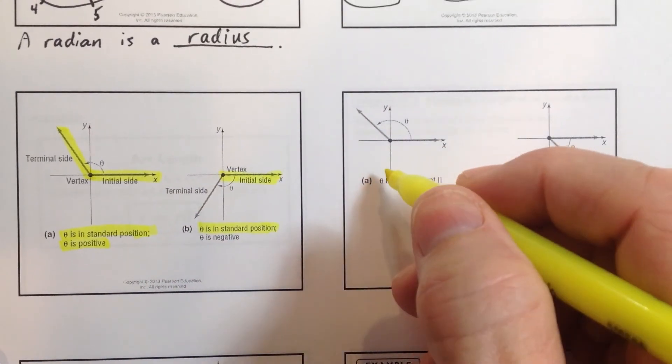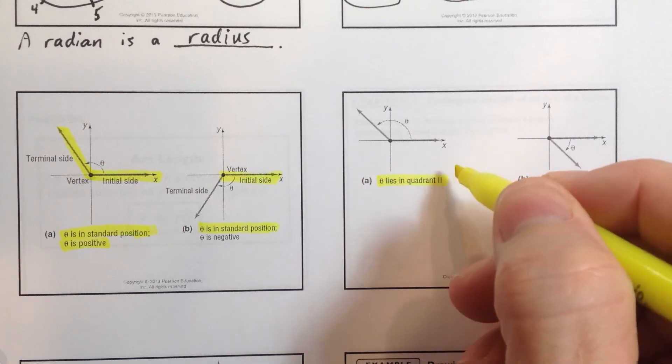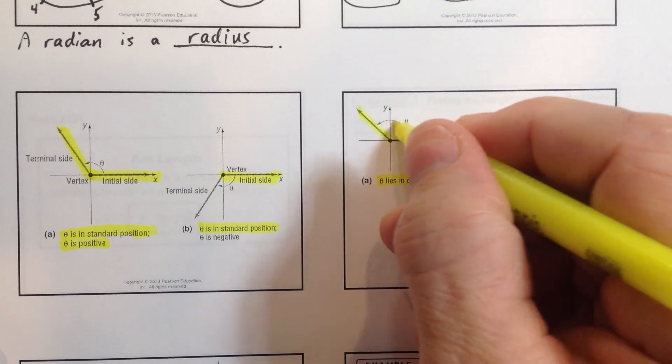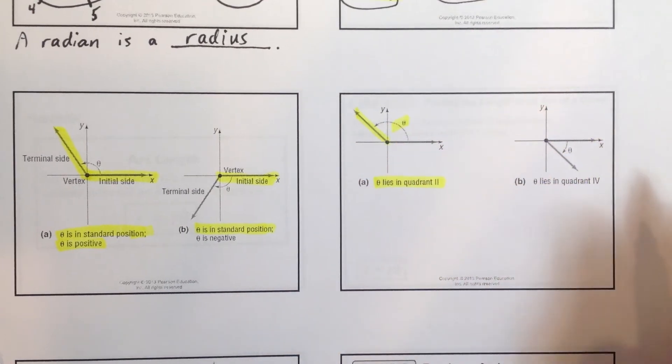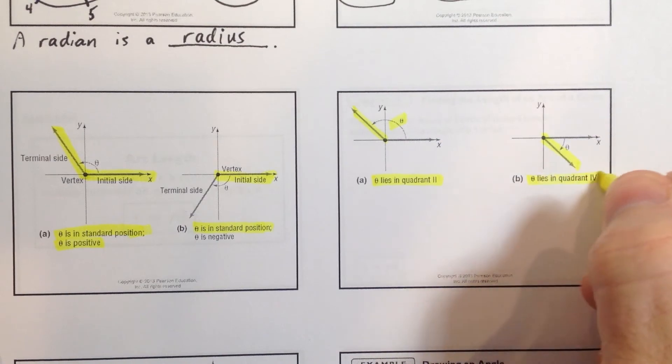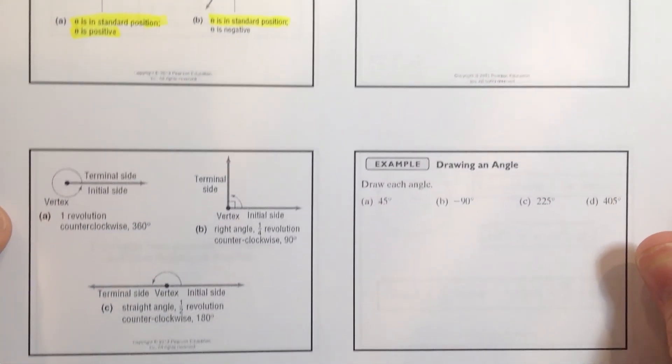All right. And then, I think we know this, that theta lies in quadrant 2. So if the terminal side of the angle is in quadrant 2, then theta lies in quadrant 2. If the terminal side of the angle is in quadrant 4, we say theta lies in quadrant 4.